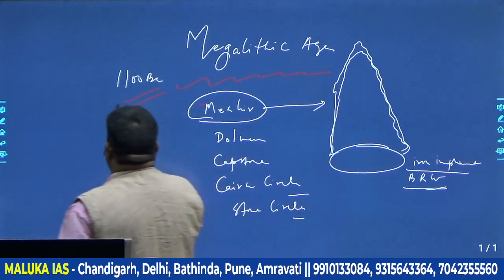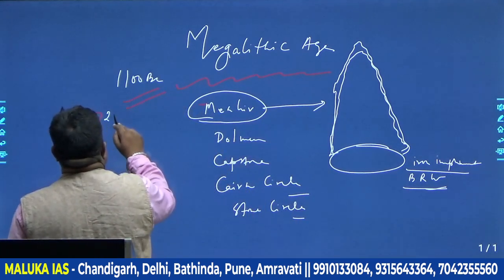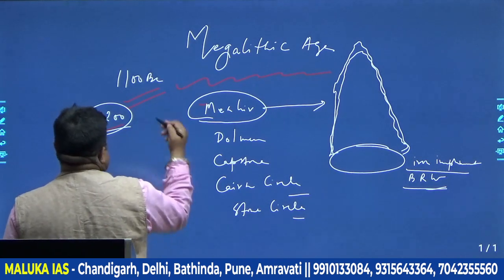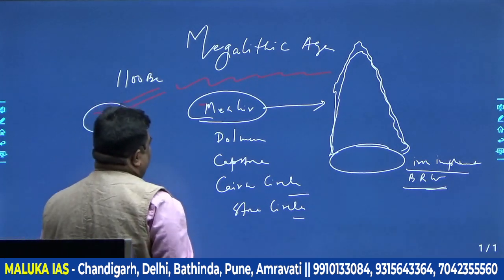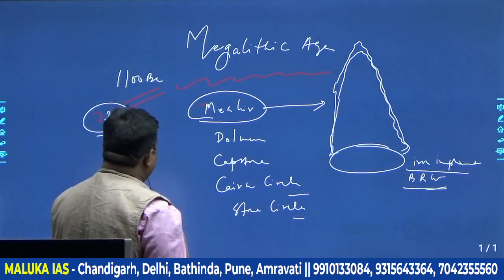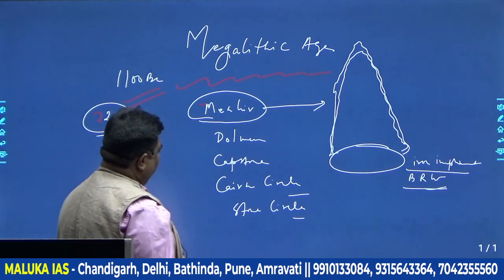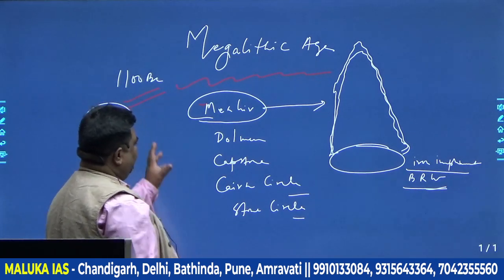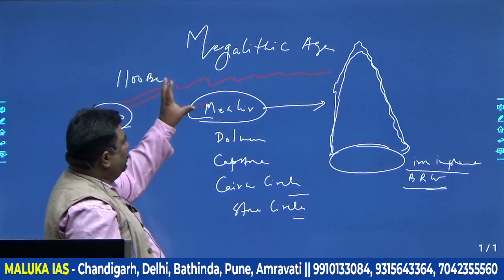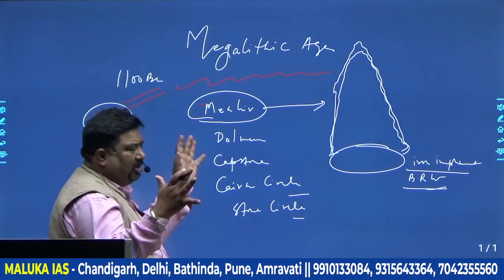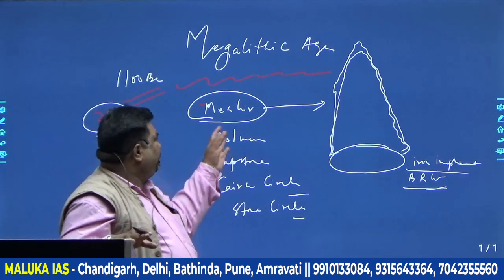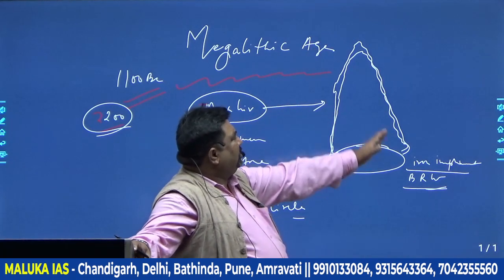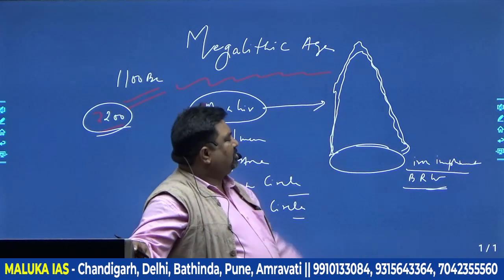Nowadays it is the age of JCB, so many of these sites have been lost. It is claimed that from South India we have almost 2200 megalithic sites. The traits include four or five types of burial structures — one is the menhir, one is the dolmen. Megalith means big stones — the size of the stones placed.